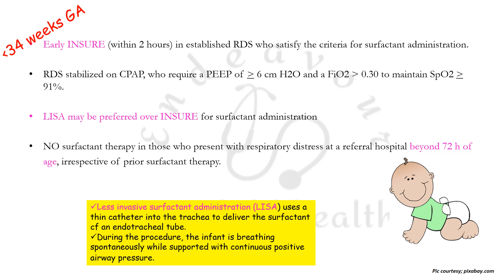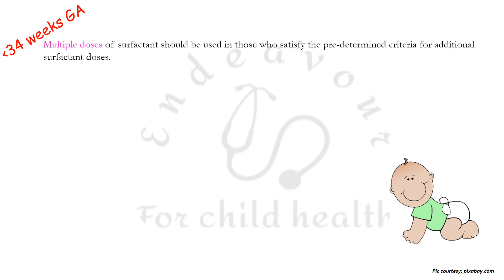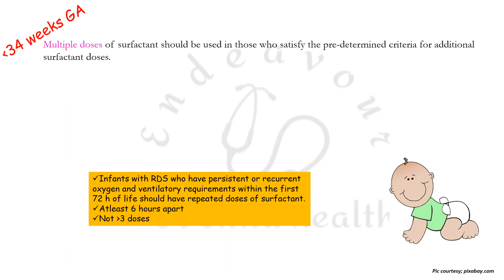No surfactant therapy is recommended in those who present with respiratory distress at a referral hospital beyond 72 hours of age, whether or not they have been given surfactant initially. Early intratracheal corticosteroids may not be used as an adjunct to surfactant. Multiple doses of surfactant should be used in infants who satisfy predetermined criteria — that is, those having RDS with persistent or recurrent oxygen and ventilator requirements within the first 72 hours of life. Multiple doses should be separated by an interval of at least six hours, with not more than three doses recommended.